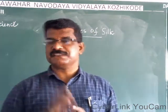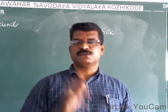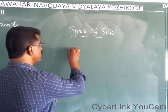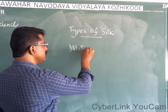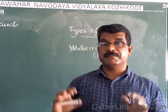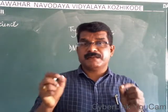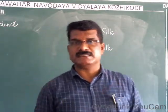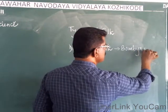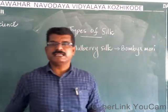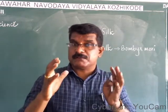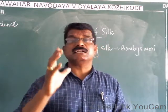Now let us study about the types of silk. There are different types of silk. The most common type is mulberry silk. Mulberry silk is known as Bombyx mori — that is the scientific name. Bombyx mori is the mulberry silkworm which feeds on mulberry leaves.